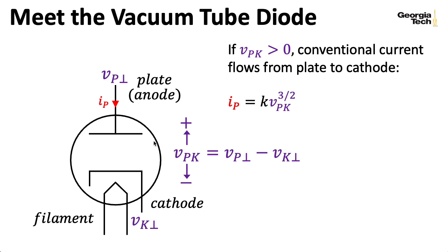But if the voltage at the plate is lower than the voltage at the cathode, then no current flows. So this forms a good old-fashioned diode. Current flows in one direction, but not the other direction. And the current, when it does flow, is equal to a constant times the voltage difference between the plate and the cathode to the three-halves power. So that's 1.5.